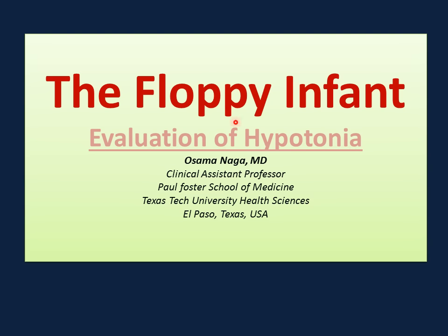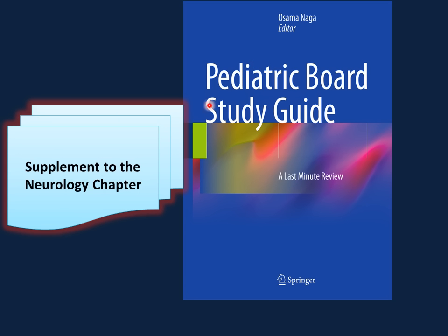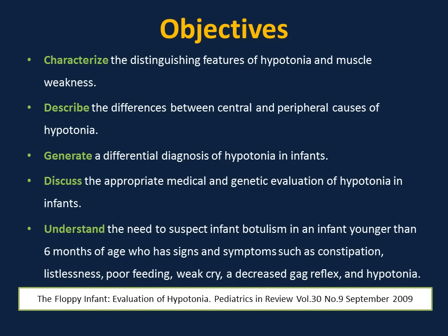Hello, my name is Usama Naga. We'll discuss in this section the floppy infant and evaluation of hypotonia in infants. This presentation is a supplement to the neurology chapter in the Pediatric Board Study Guide. My objectives in this presentation are to be able to characterize the distinguishing features of hypotonia and muscle weakness, describe the differences between central and peripheral causes of hypotonia, generate a differential diagnosis of hypotonia in infants, and discuss the appropriate medical and genetic evaluation of hypotonia in infants.